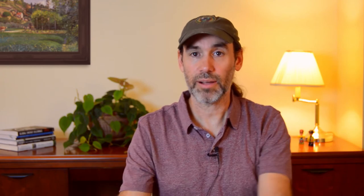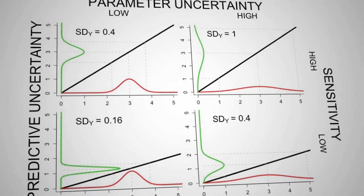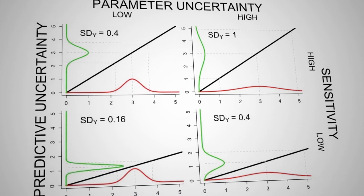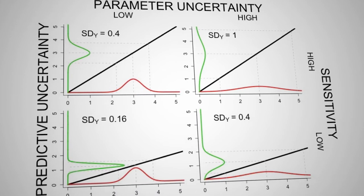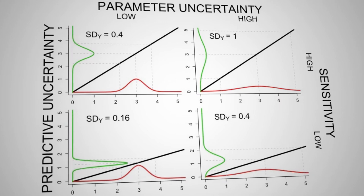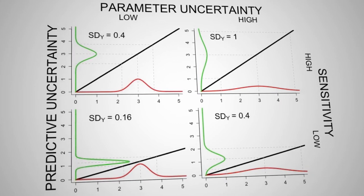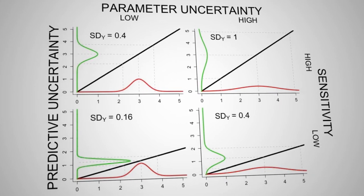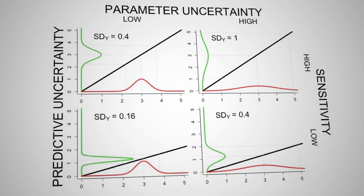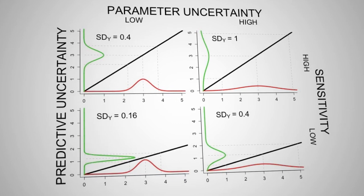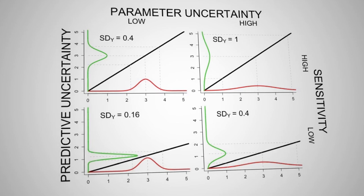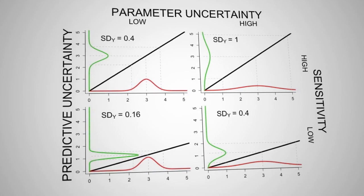It's really the interaction between these two things. If we have parameters that are very sensitive and very uncertain, they're going to contribute a lot to our predictive uncertainty. By contrast, if we have things that are very insensitive and very well constrained, they contribute very little. And in between, things can be important either because they're very sensitive or because they're very under-constrained.